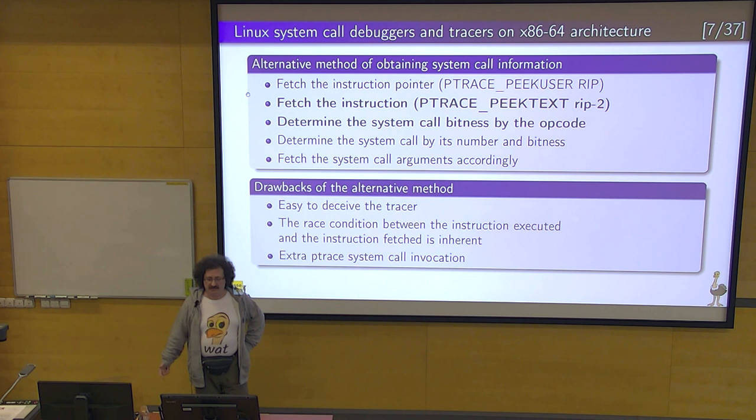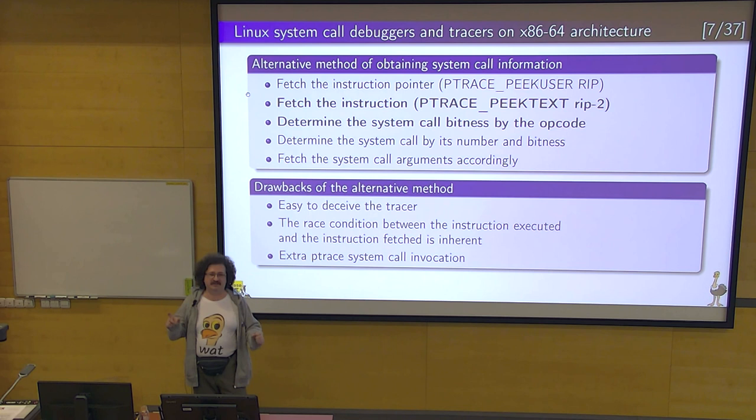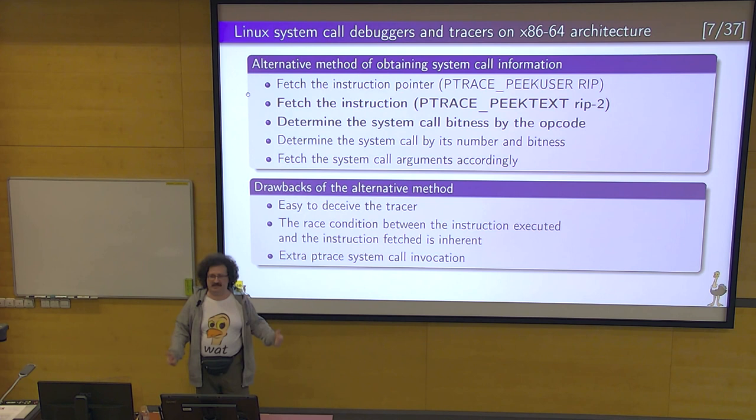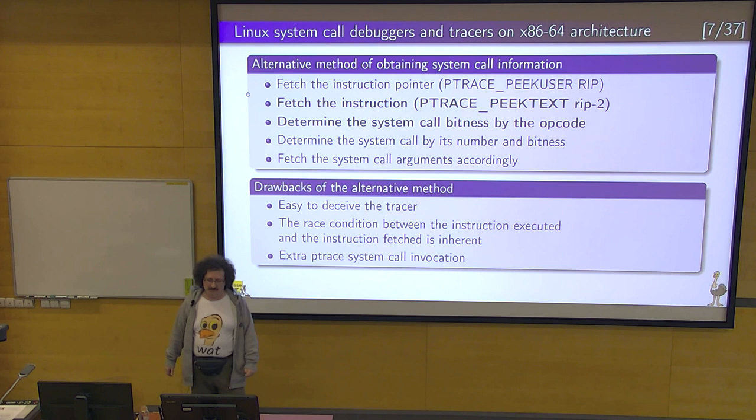There is a condition — it's not just inherent. Later in 2012, Linus Torvalds showed a very short, several-line example of how to deceive the tracer in a reliable way. So it's actually not a race if you can deceive it 100 percent of the time. It's also an extra system call invocation, but compared to the unreliable result, it's not really a big deal.